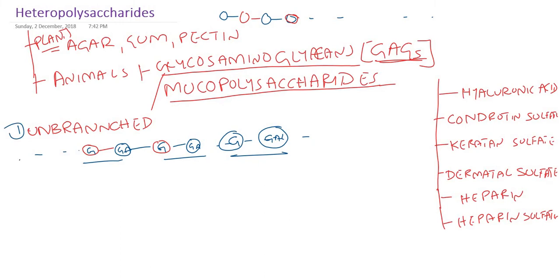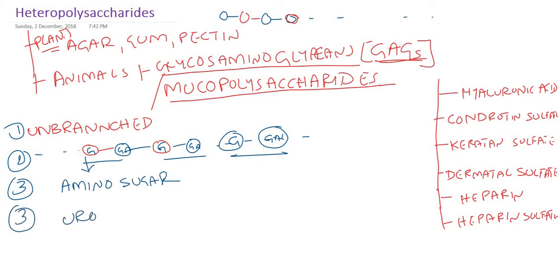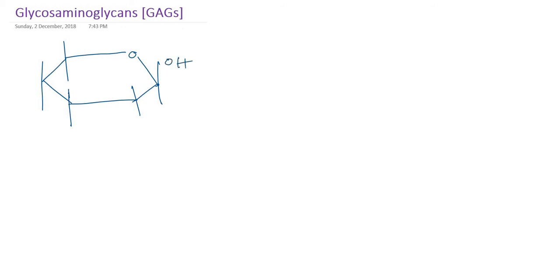Point one: they are unbranched. Point two: they are repeating disaccharides. The third point is that one of the components is amino sugar, and another component is uronic acid. What is amino sugar? Glucose is a hexose — we can draw it with the beta configuration: up, down, up, down, up, with CH₂OH at carbon 6. This is the structure of glucose.